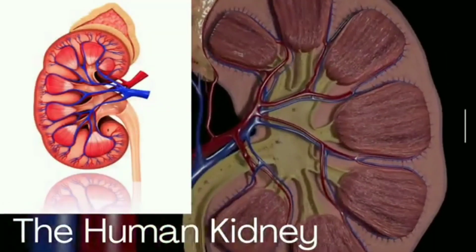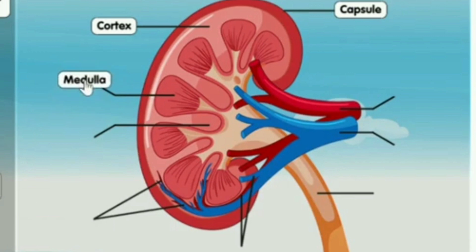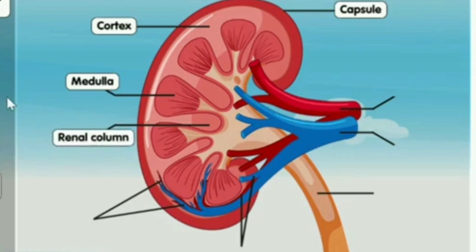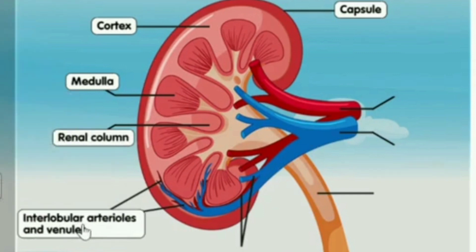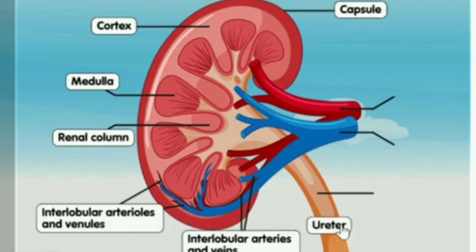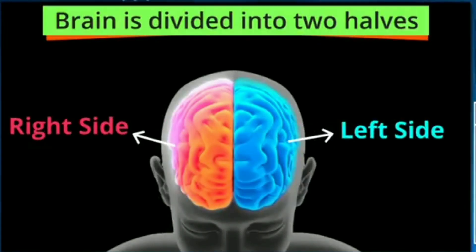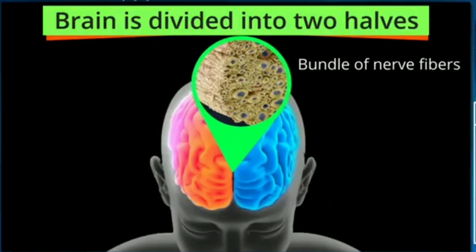Learn how to label the parts of the kidney. Capsule, cortex, medulla, renal column, interlobular arterioles and venules, ureter, renal artery, renal vein.